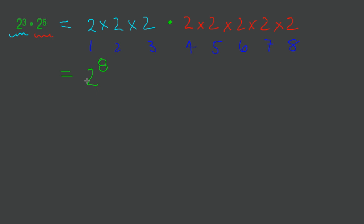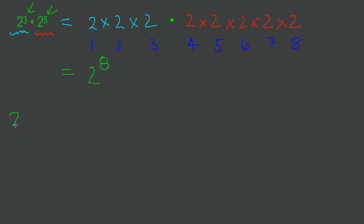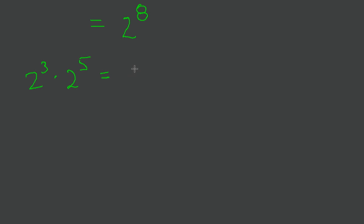Now you might take a look at the original question and say wait a second, we had a 3 and a 5 here. Is there any way to get from the 3 and the 5 to the 8? And I'm sure you've all recognized that we could have done this by saying 2 to the exponent 3 times 2 to the exponent 5 is just 2 to the exponent 3 plus 5.